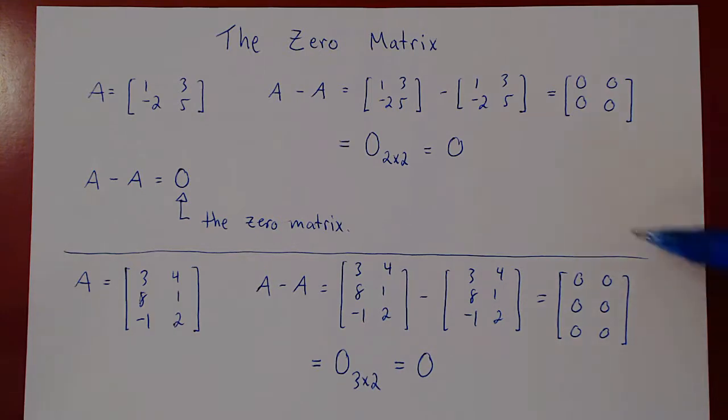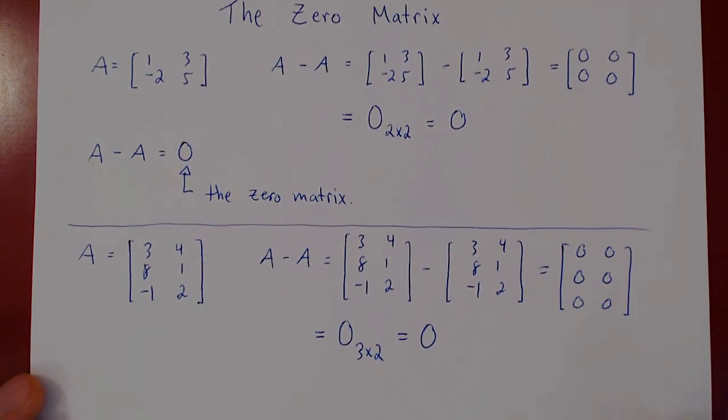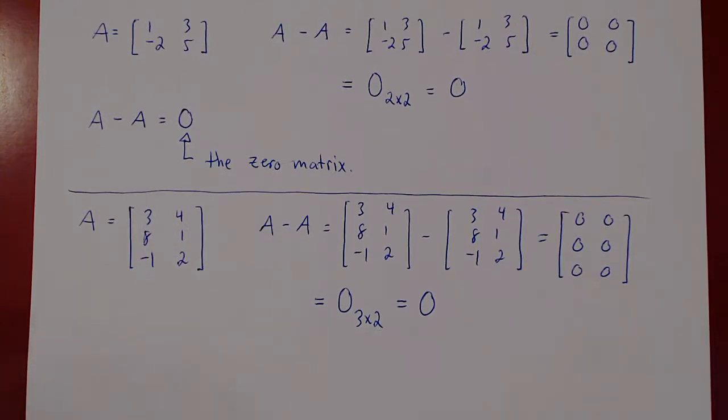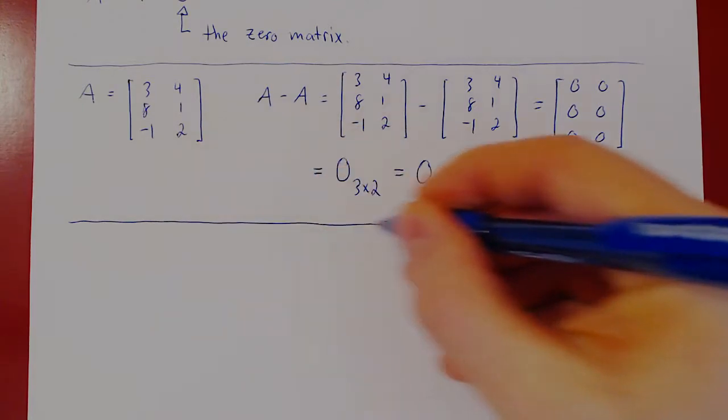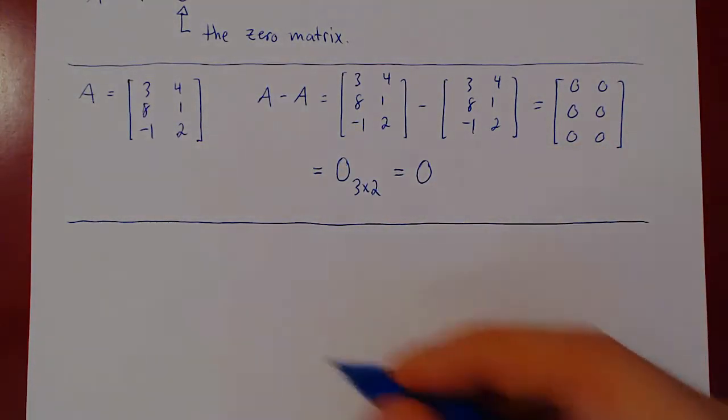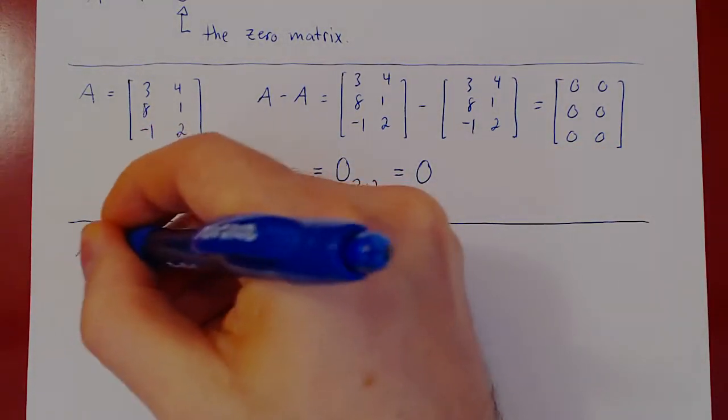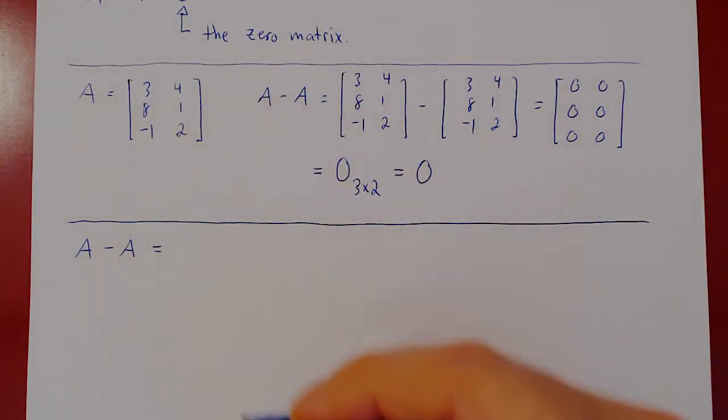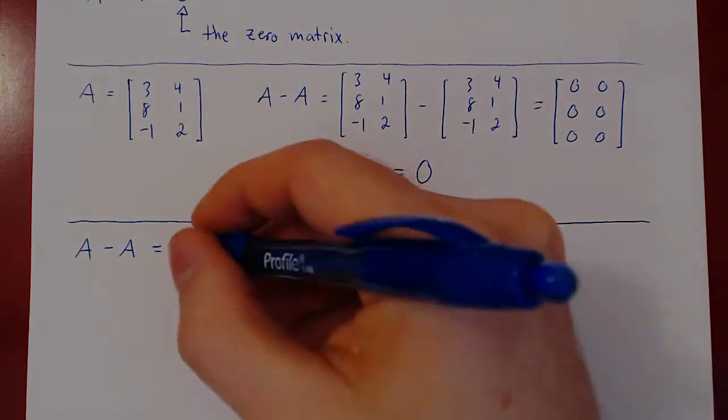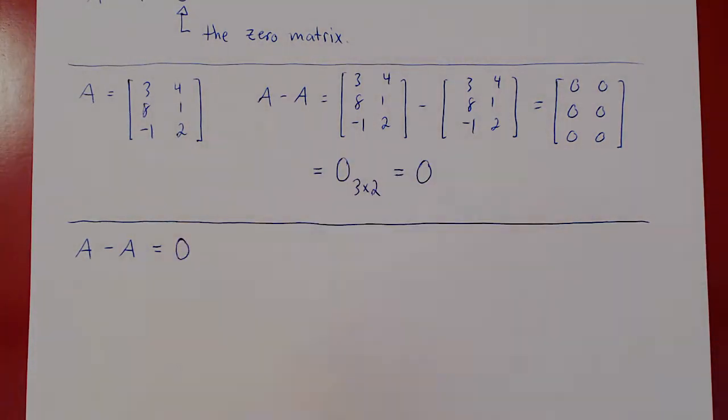And again, the nice thing about this matrix is it behaves algebraically just as the zero real number. Let's look at the basic properties of the zero matrix to see that it really behaves like the zero real number. Well, the first property we've already seen. If we do A minus A, where A is any matrix, we get a matrix of the same size that consists of all zeros, and we simply write uppercase zero. So A minus A is the zero matrix.